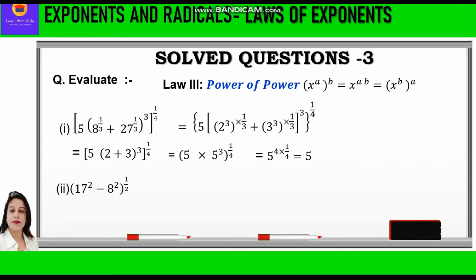Now let's take the second question: 17 squared minus 8 squared, whole raised to power half. Now 17 squared is 289 and 8 squared is 64, so we write 289 minus 64 raised to power half. 289 minus 64 is 225, further raised to power half. 225 is 15 squared, so we write 15 squared into half, and 2 and 2 will get cancelled. We apply the third law — power of power — and we get the answer 15.